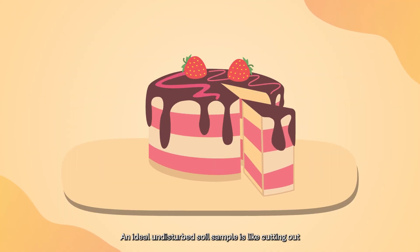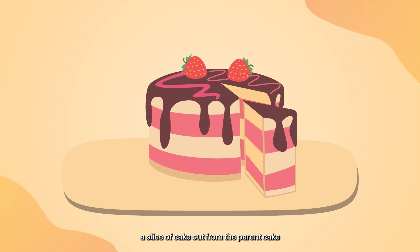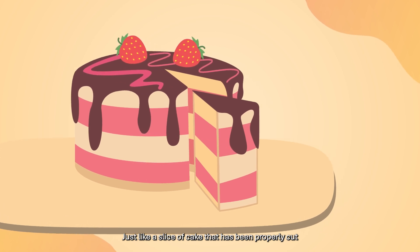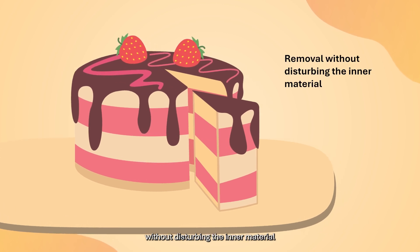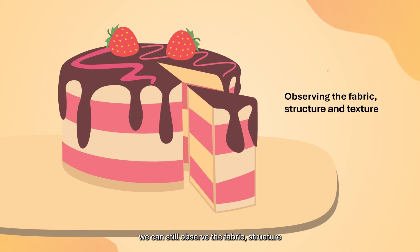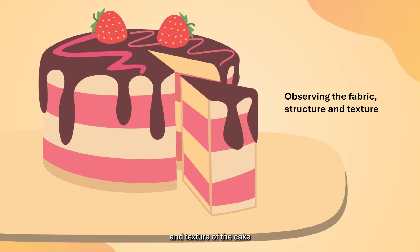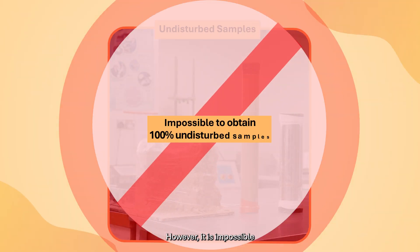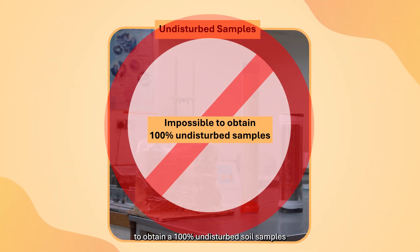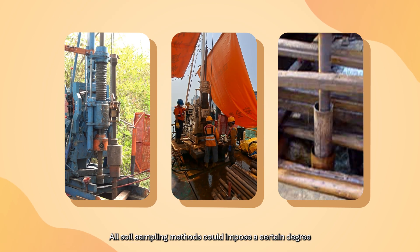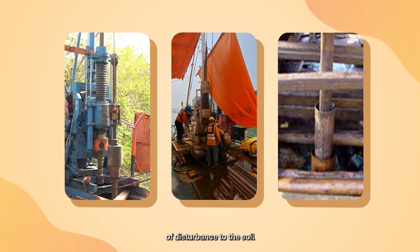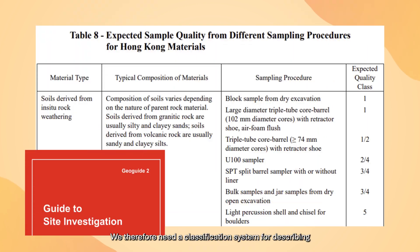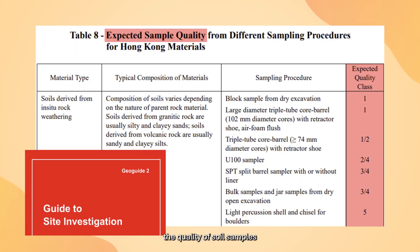An ideal undisturbed soil sample is like cutting out a slice of cake from the parent cake, which still retains its original properties. Just like a slice of cake that has been properly cut and removed from its original position without disturbing the inner material, we can still observe the fabric, structure, and texture. An ideal undisturbed soil sample is a sample with soil that has not been altered in any way from its natural state. However, it is impossible to obtain 100% undisturbed soil samples, as all soil sampling methods could impose a certain degree of disturbance while retrieving soil from the ground. We therefore need a classification system for describing the quality of soil samples.